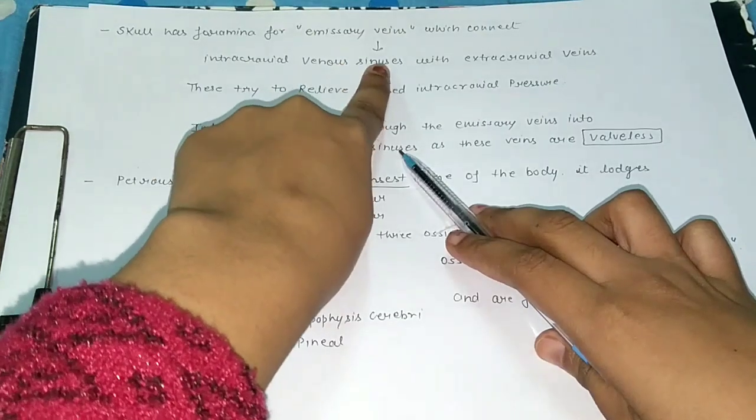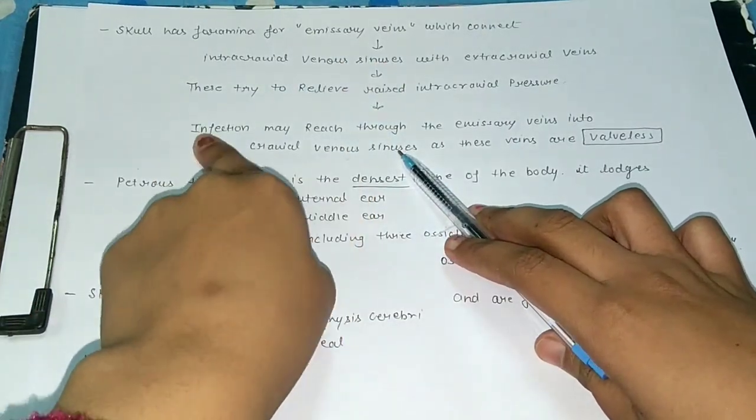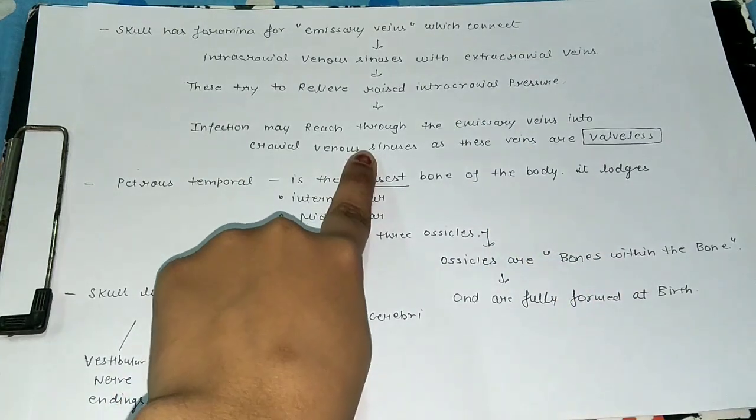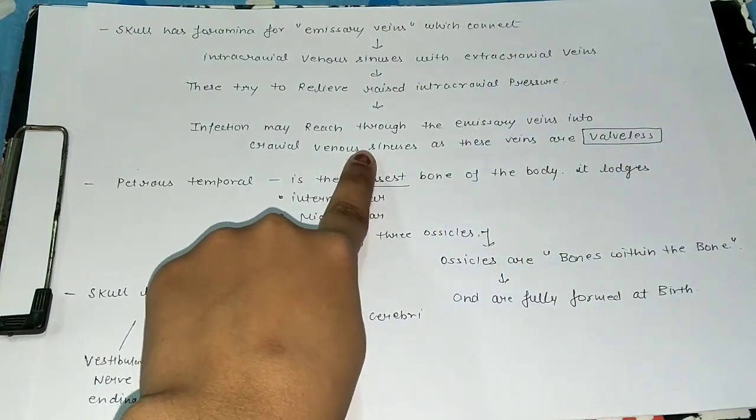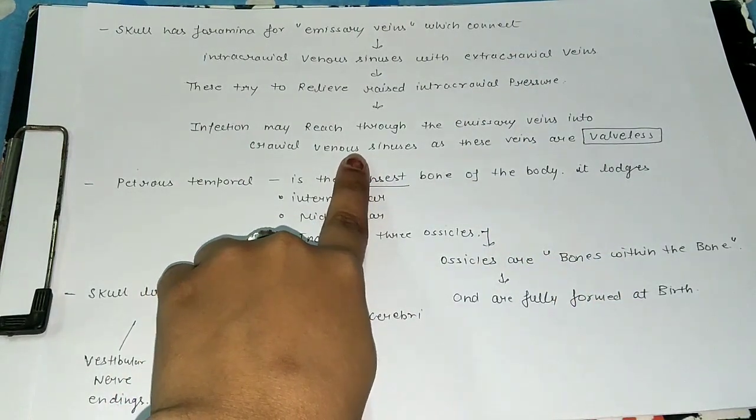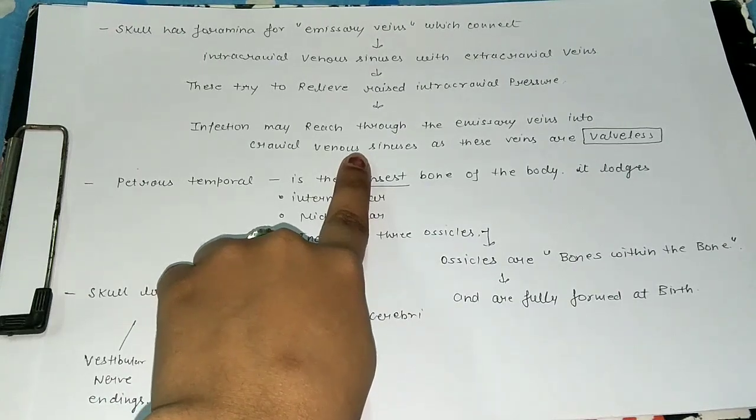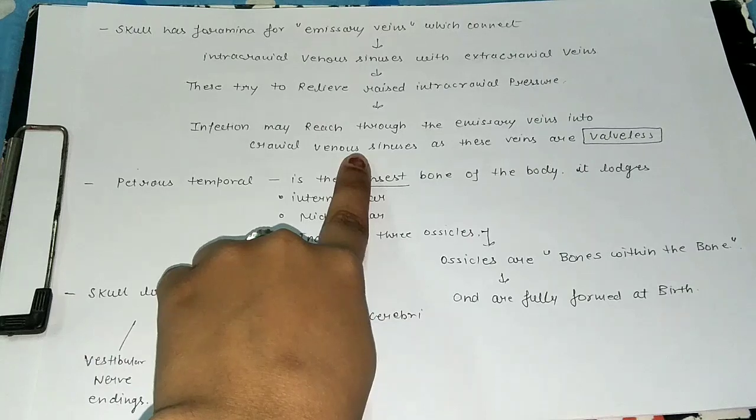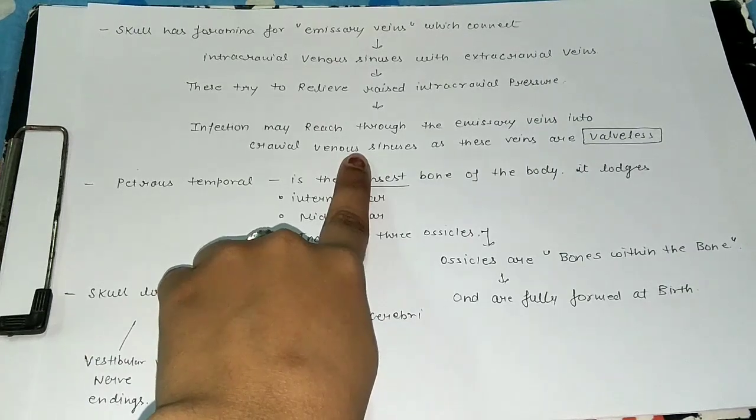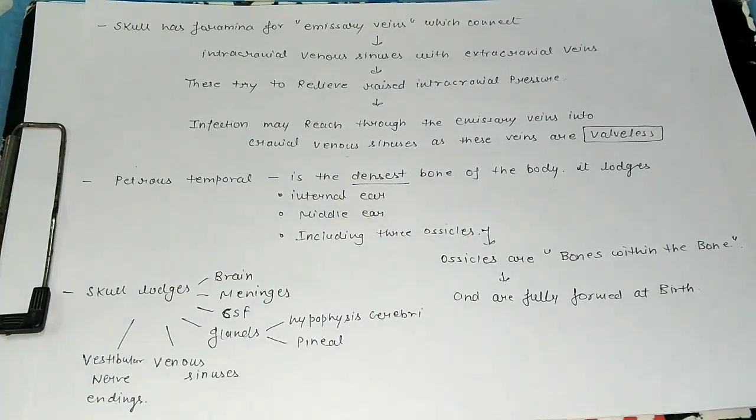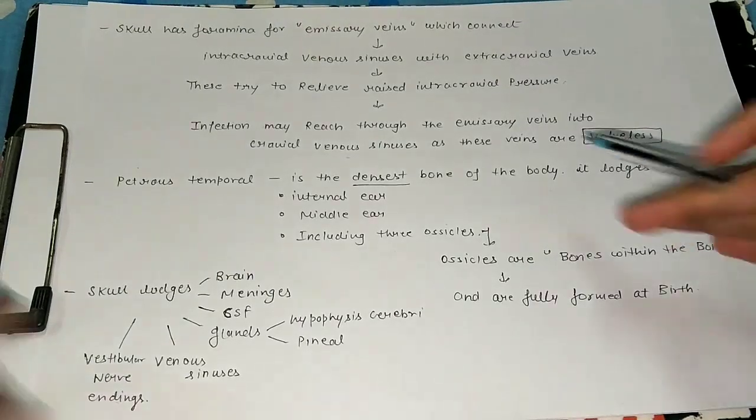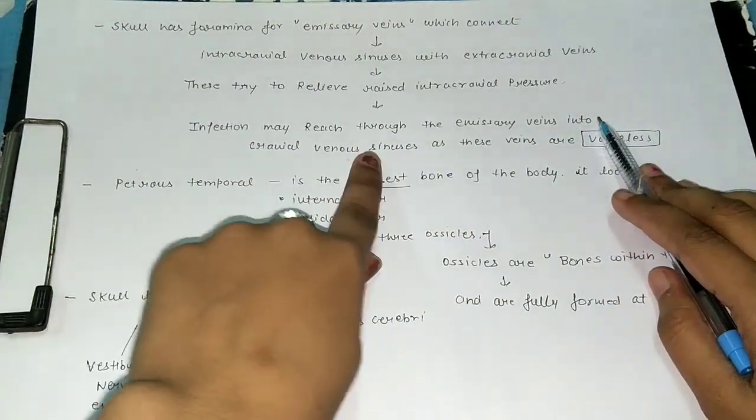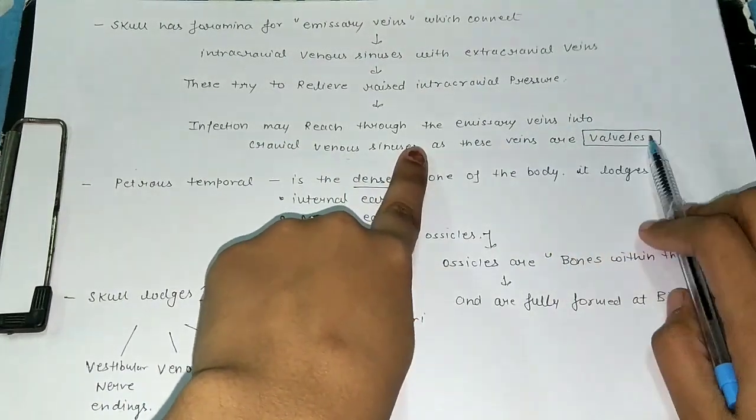This connection between intracranial sinus to extracranial veins is very important. We're talking about structures inside the brain, so infections here would be very dangerous. There are problems if infections occur here.